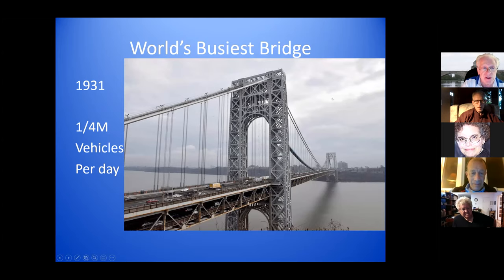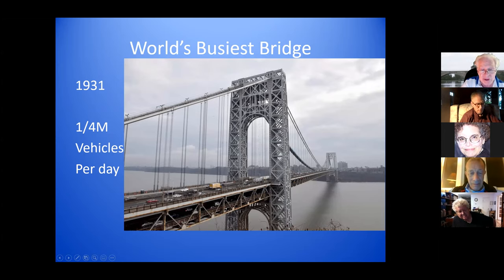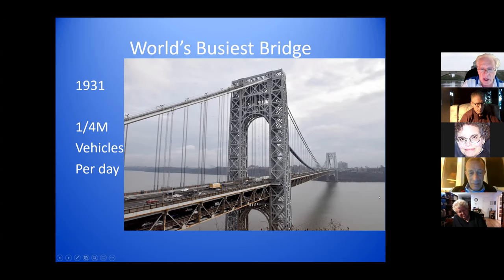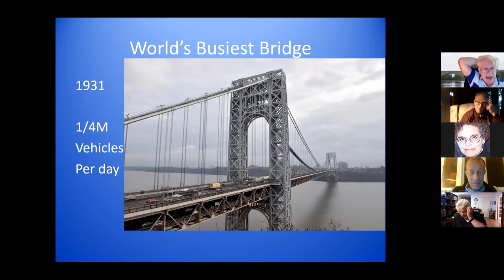The world's busiest bridge is the George Washington Bridge, built in 1931. A quarter of a million vehicles cross the bridge every day. At some point they built a second roadway underneath the initial roadway, so now there are two. That quarter of a million a day comes to over 10 million a year, and that's why it's the world's busiest bridge.